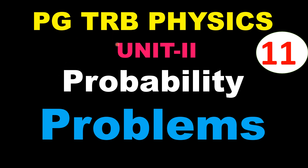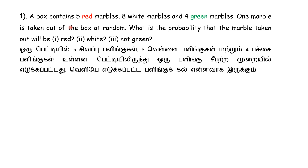Hi viewers, welcome to our channel SS Academy for Physics. In this video we are covering probability. The first problem: a box contains five red marbles, eight white marbles, and four green marbles. One marble is taken out of the box at random. What is the probability that the marble taken out will be red, white, or not green?